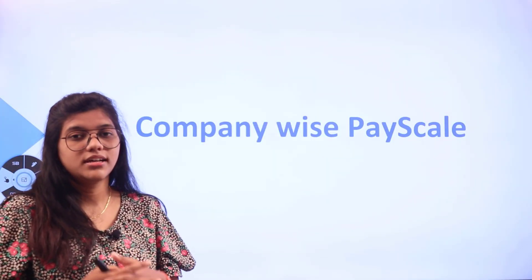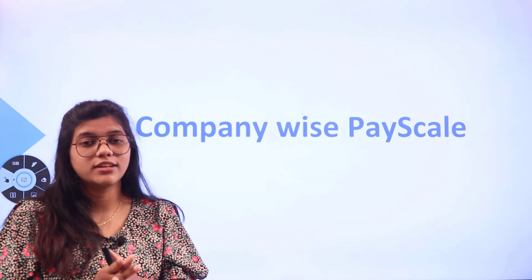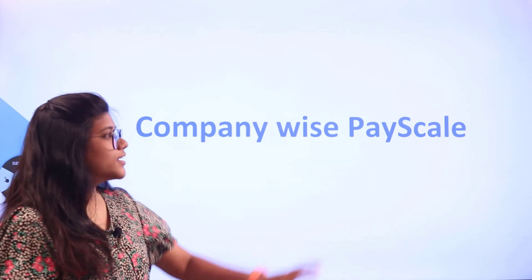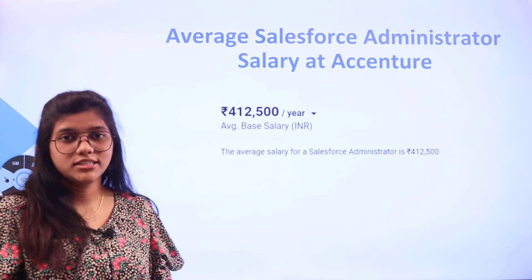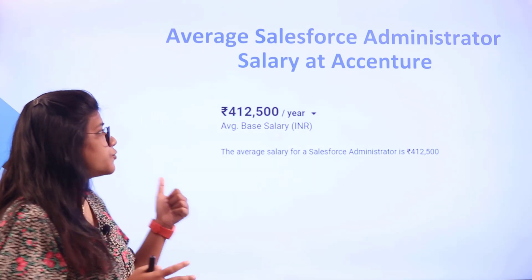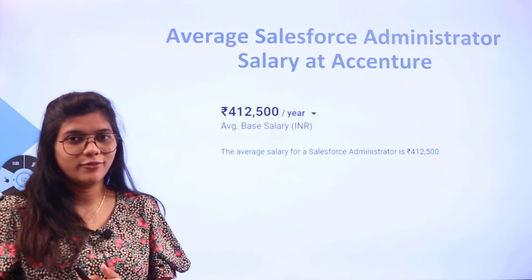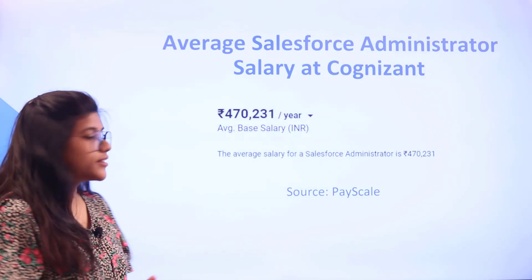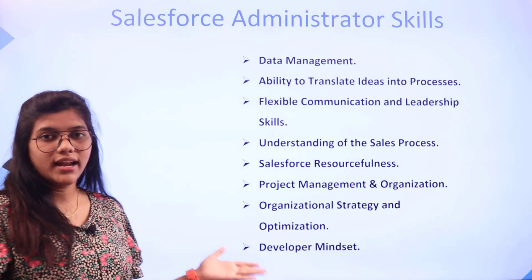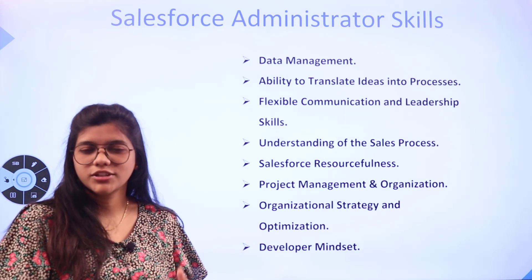Now let's look at how companies are paying, so that when you land in one of these companies you know how much to demand if you have the right certifications and skills. Accenture pays 4,00,000 per annum and Cognizant pays 4,70,000 per annum. Next, we are heading over to the skills required.